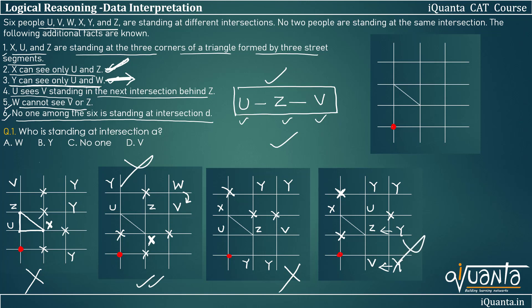In the fifth case, X is placed here, Z here, U here. X must see only U and Z, so no one is placed at the blocking positions. V must be placed behind Z in a straight line, so V goes here. Using the third clue, Y is placed here — Y can see U. W is placed here, so Y can see only U and W. Checking the fifth condition — W cannot see V or Z — W cannot see V, and W cannot see Z. This arrangement satisfies all conditions. This is the only valid arrangement.